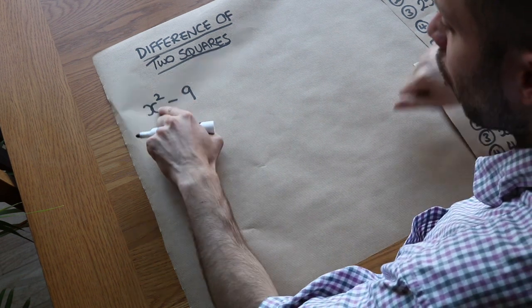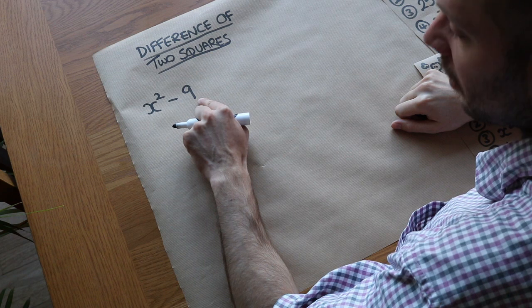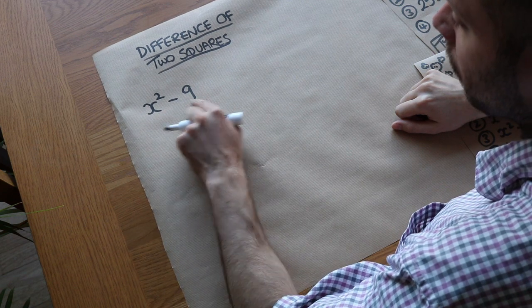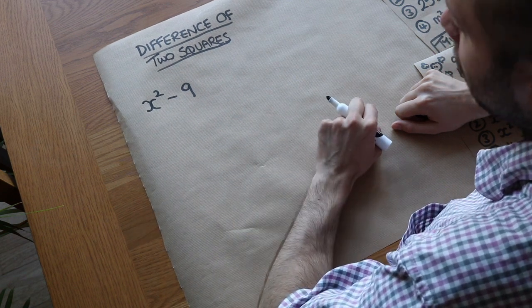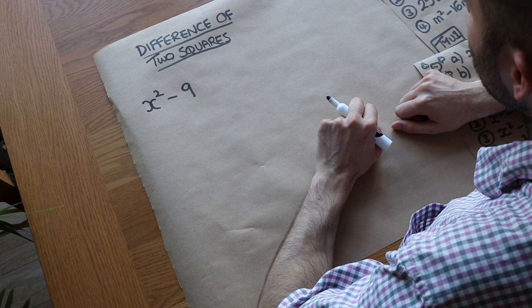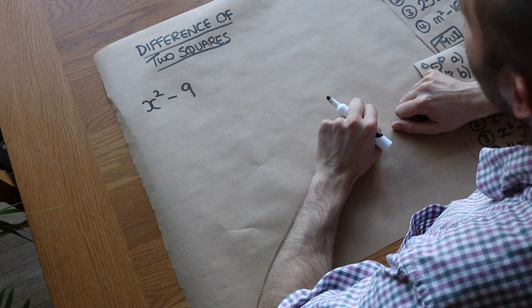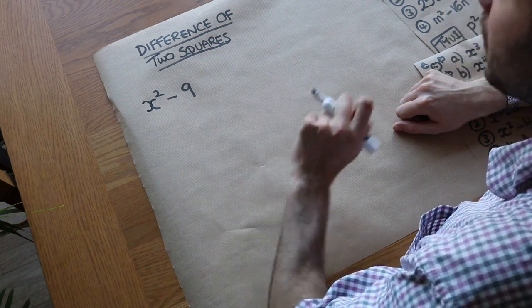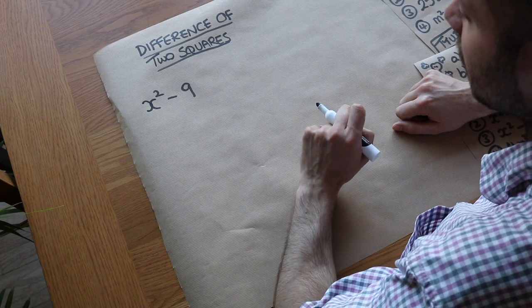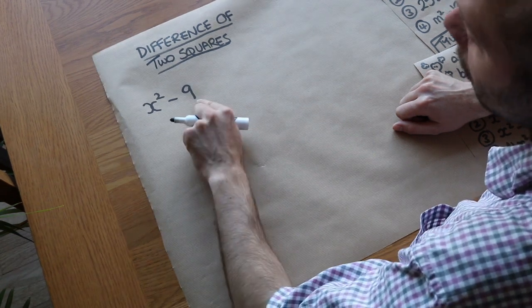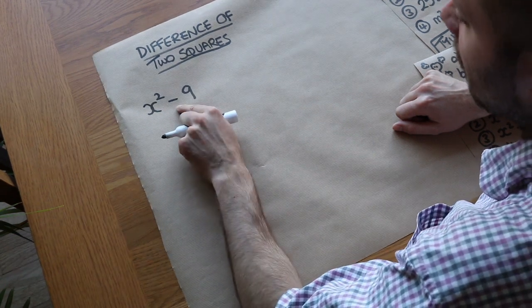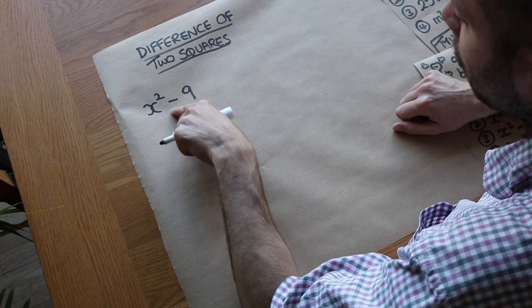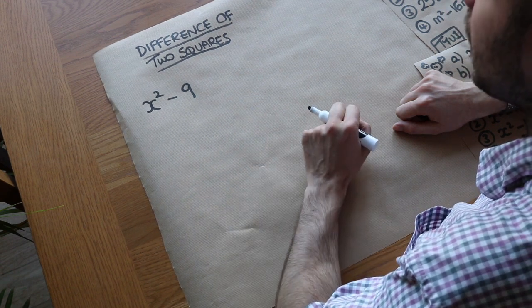We might ask: is there a common term? Is there something common to both parts? Well, no — there's nothing common to both, so we can't factor out a common term. We might also ask: is it in the form x squared plus something x plus something? The answer is no, because there's no x term in the middle.